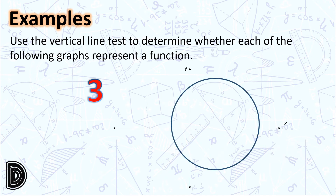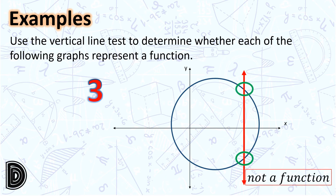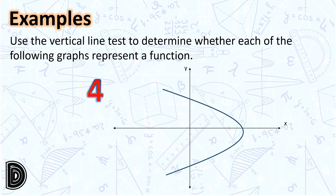Next, a circle. When we draw a vertical line test, the vertical line may intersect the circle at a single point when it is tangent. Yet, there are parts of the graph of the circle where the vertical line will intersect the graph at more than one point. Hence, the graph representing a circle is not a function. Number 4 is a parabola that opens to the left. When we draw a vertical line, it intersects the graph at more than one point. Hence, the parabola that opens to the left is not a function.